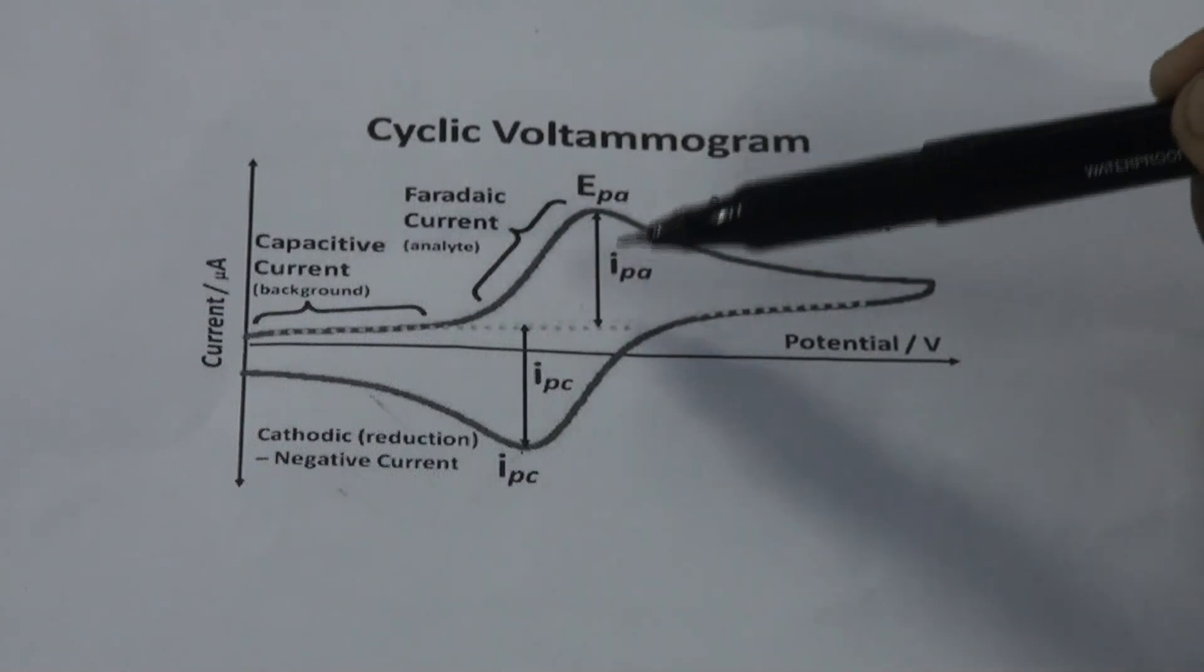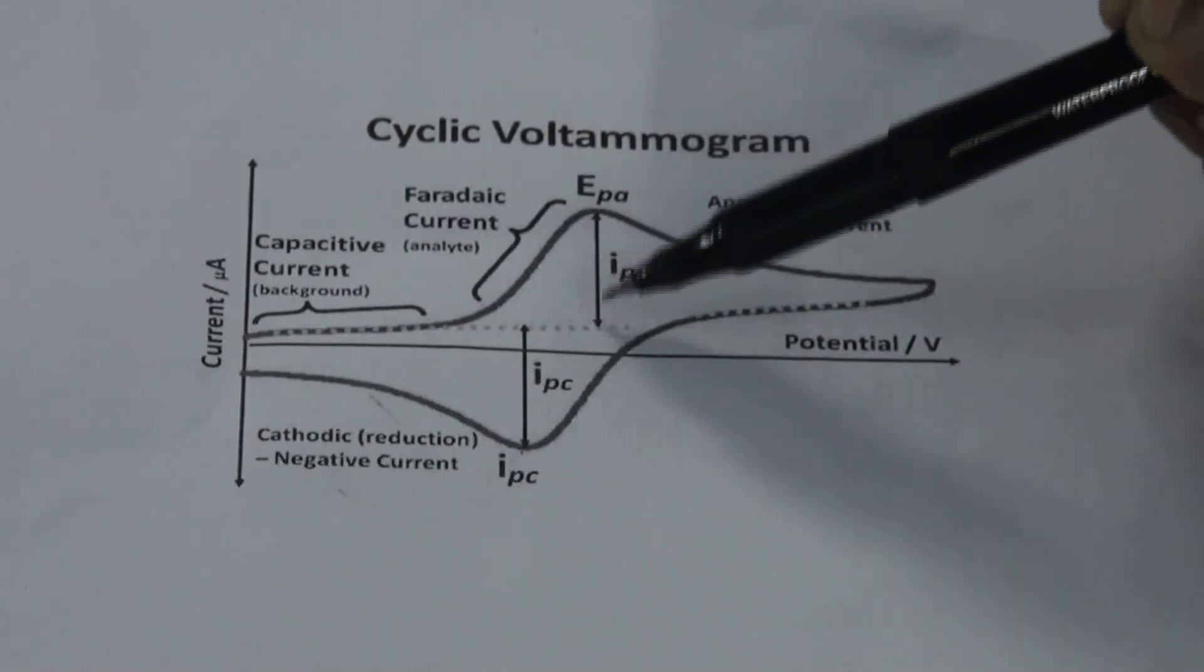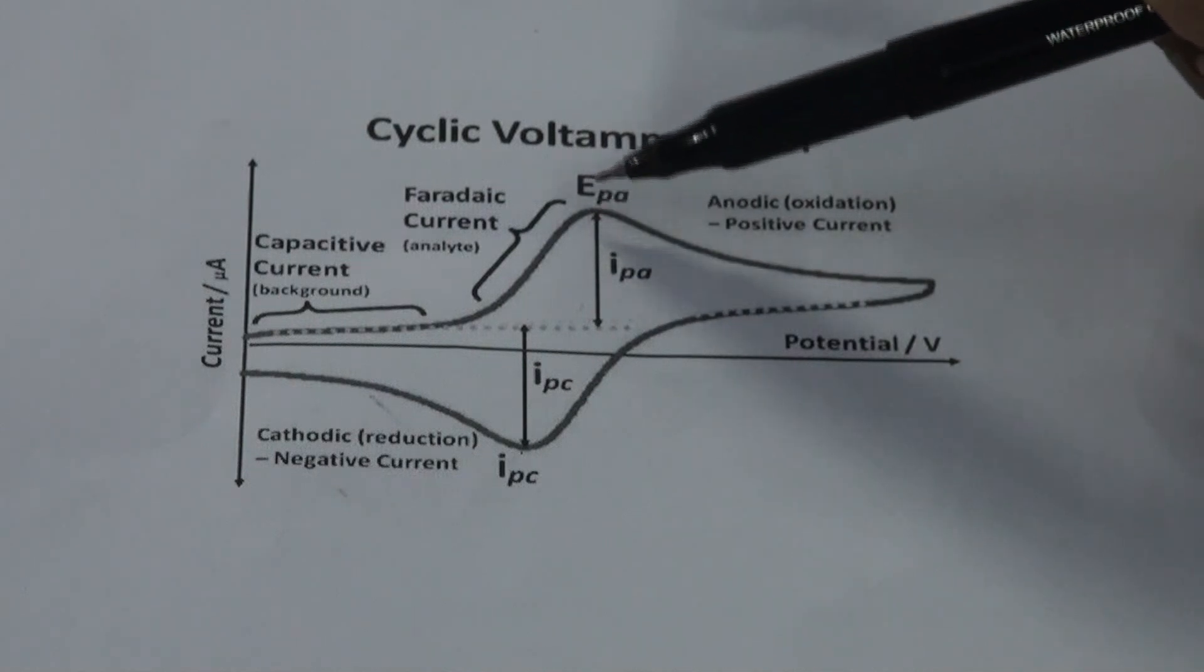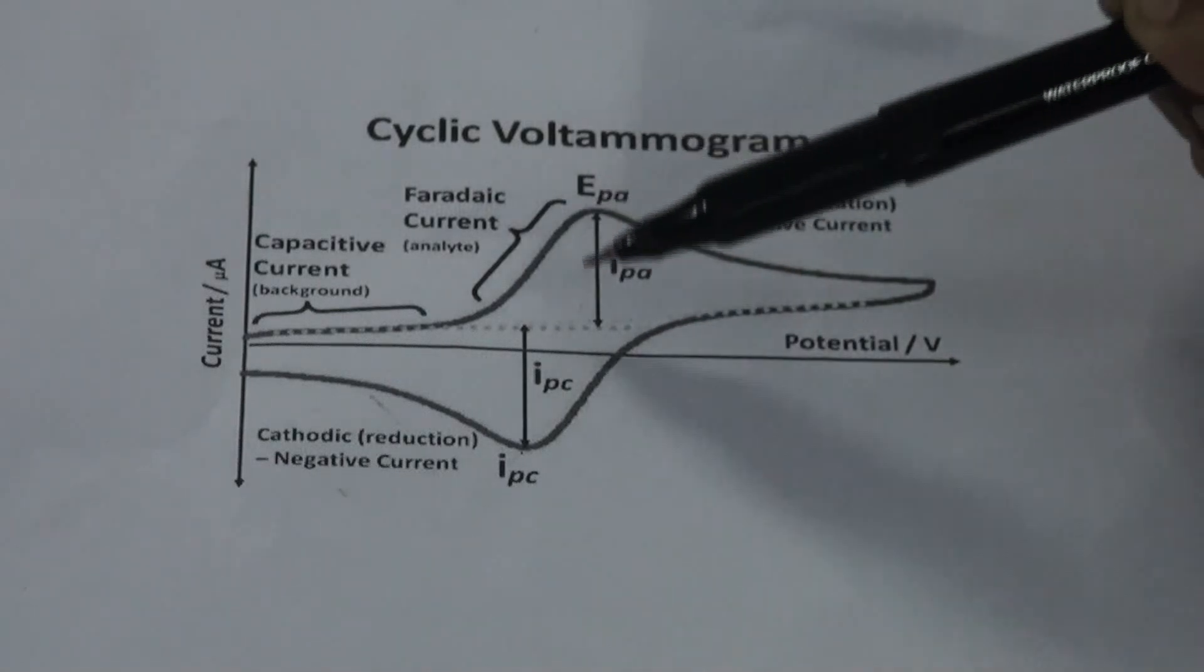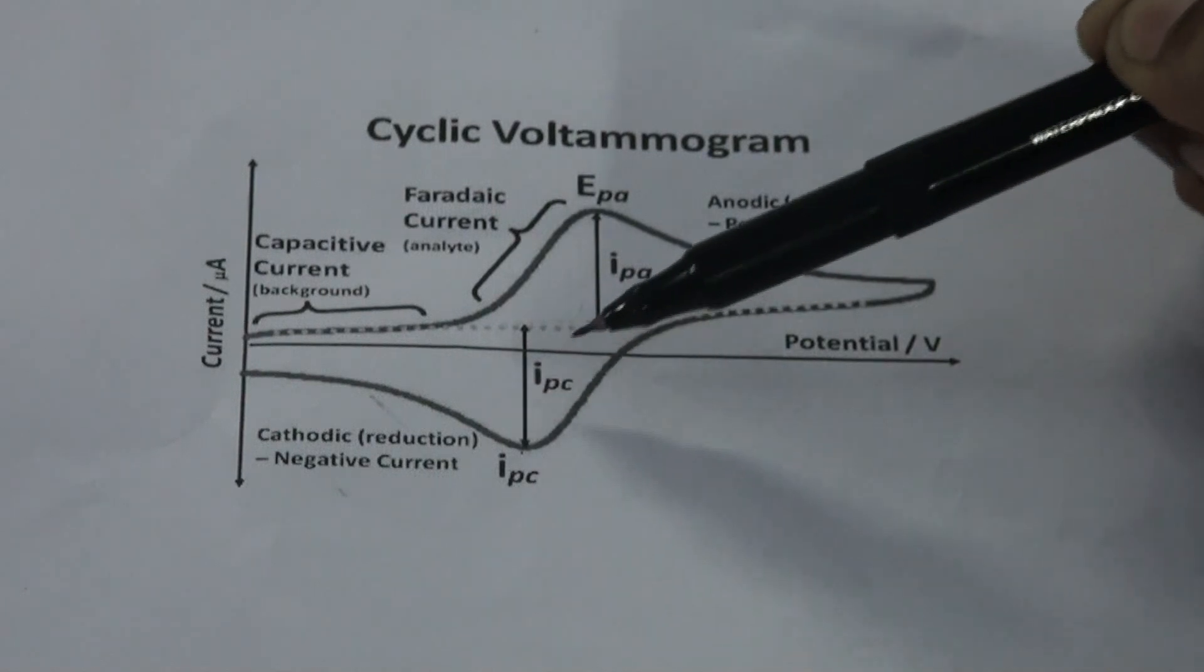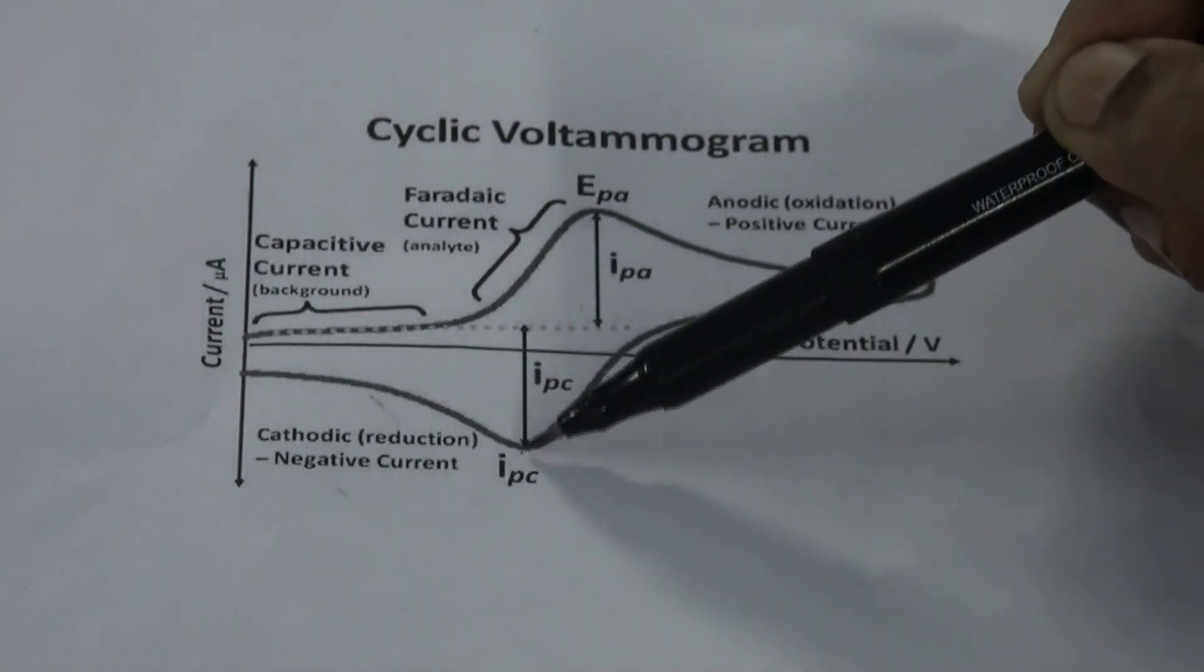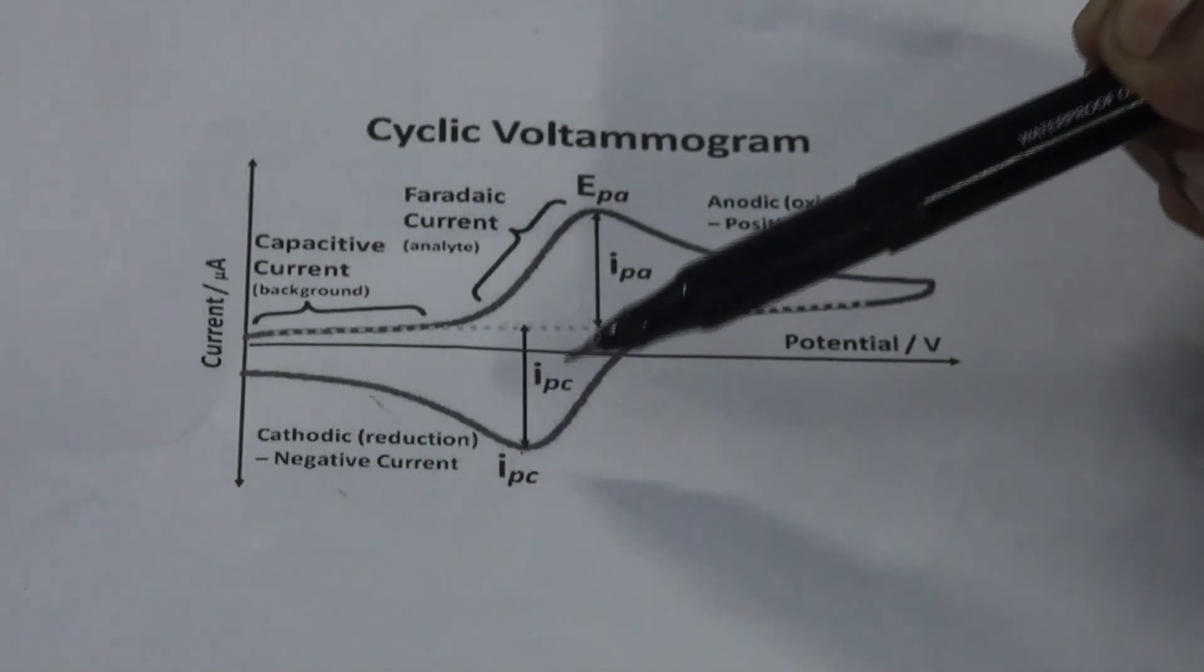To draw this tangent, we will draw the tangent and draw perpendicular to it. The point which we get on the peaks gives us the peak potential value and the current value. This is similar in the case of cathodic peak current and peak potential. Here we have drawn the tangent, then perpendicular to it, and obtained the values of the potential as well as the current.